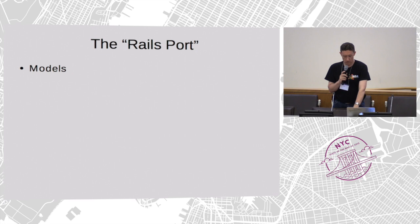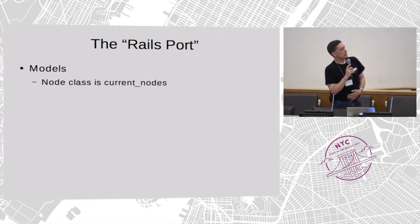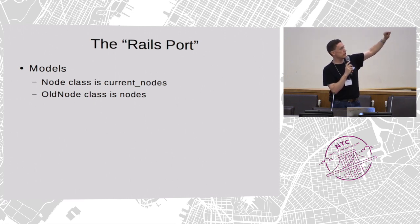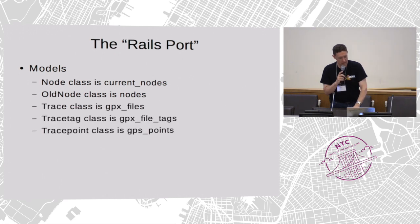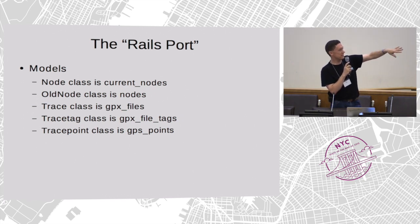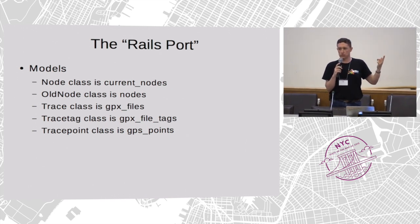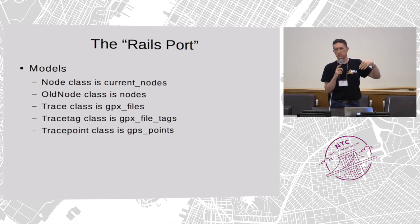The models — there's one class per table. Mostly the Ruby class name will match the database table name, except when they don't. The node class actually maps to the current nodes table — the current version of any given node. And the old node class maps to the nodes table, which has one record for every version, so the most recent version in the nodes table duplicates the version in the current nodes table. This is not perhaps the best design. You'll find the same thing for ways and relations. With traces it's all a bit confused: trace is GPX files, trace tag is GPX file tags, trace point is GPS points. This is mostly a question of history from the previous version of the code.